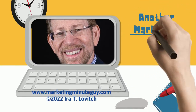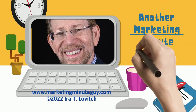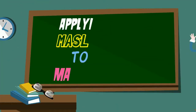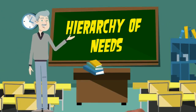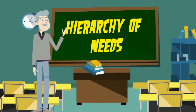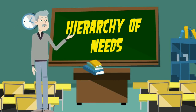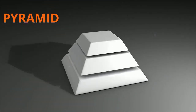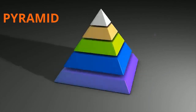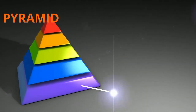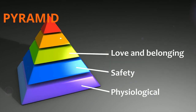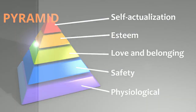Professor Ira here again with another marketing minute discussing how to apply Maslow to marketing. Based upon Abraham Maslow's hierarchy of needs, represented as a pyramid with five stages or levels of needs from the most basic on up.